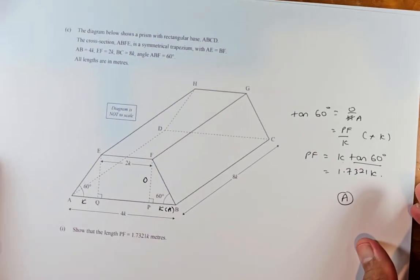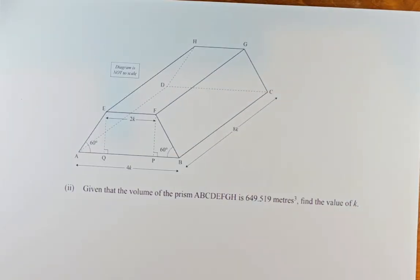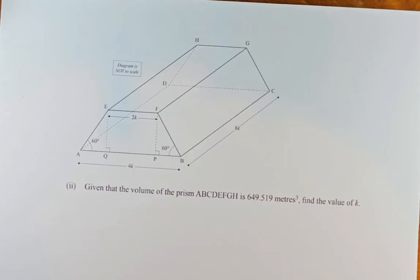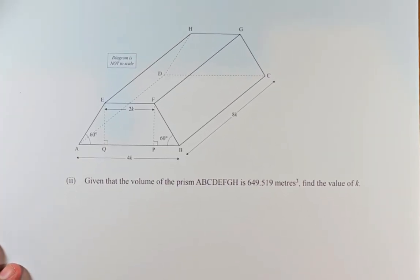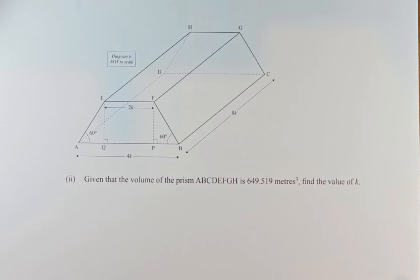Great. Now we shall do the merit question, or the excellence question. Given that the volume of the prism, this whole prism, is going to be 649.9519 meter cube, find the value of k.